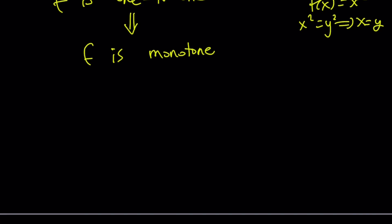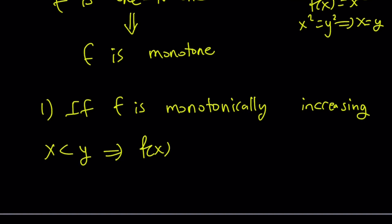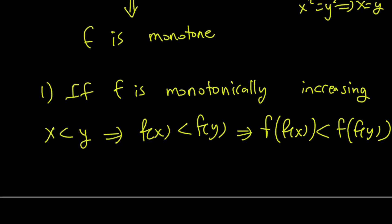Let's look at two cases. Case one: if f is monotonically increasing. Monotonically increasing means it preserves the order — if x is less than y, then f of x is less than f of y. Now let's apply f on both sides. Since f is monotonically increasing, the order is not going to change, so f of something is less than f of the other thing.